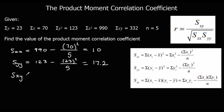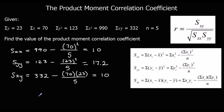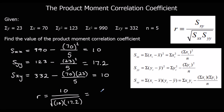And Sxy is the sum of the xy's, which is 332, minus the sum of the x's times the sum of the y's, over n. That gives us 10 again. So r is Sxy (10) over the square root of Sxx (10) times Syy (17.2). That gives us a product moment correlation coefficient of, to two decimal places, 0.76.